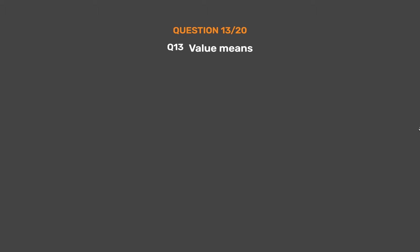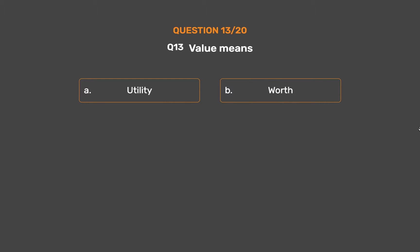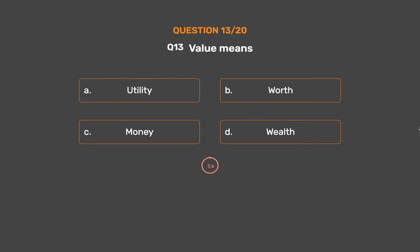Question number 13. Value means: Option A: Utility. Option B: Worth. Option C: Money. Option D: Wealth.